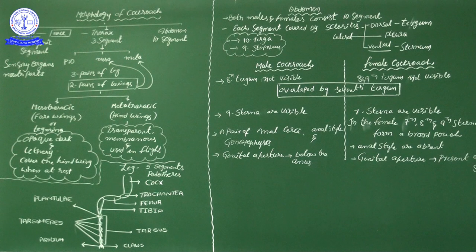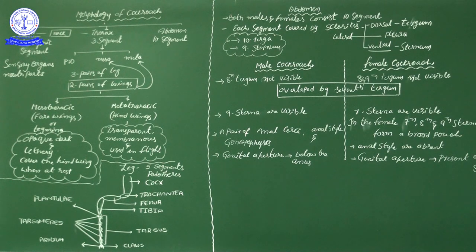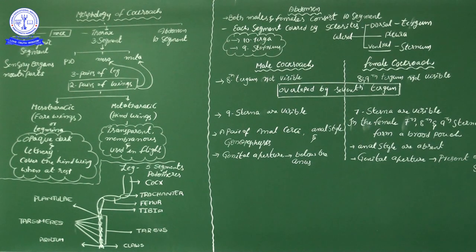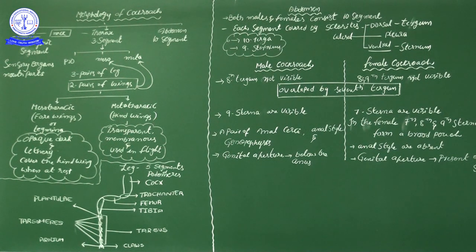The cockroach moves by the tripod system. There are six legs — three on each side. In the tripod system, one side uses two legs and the other side uses one leg, making three legs at a time. Specifically, one side moves the first and last leg while the other side moves the middle leg. This three-legged alternating movement is called the tripod system.